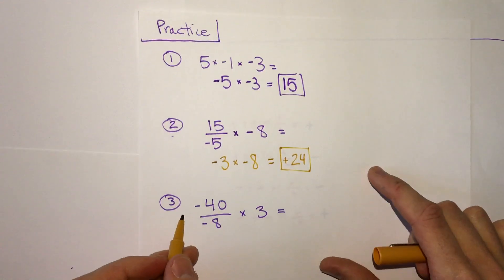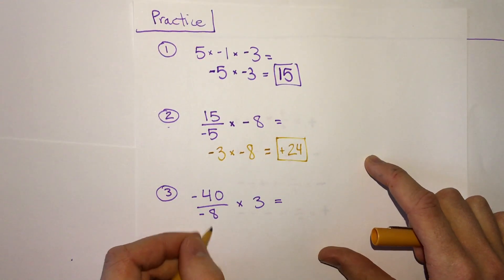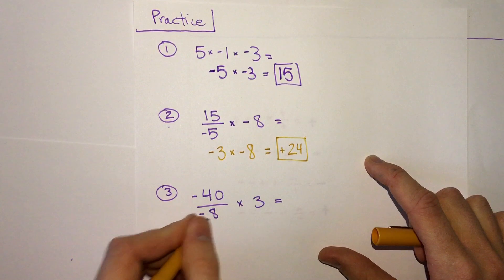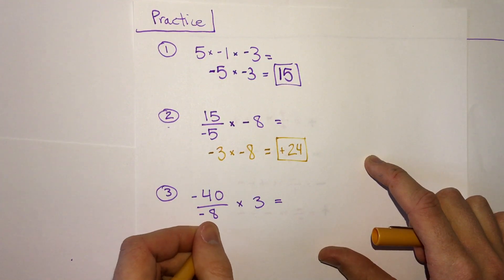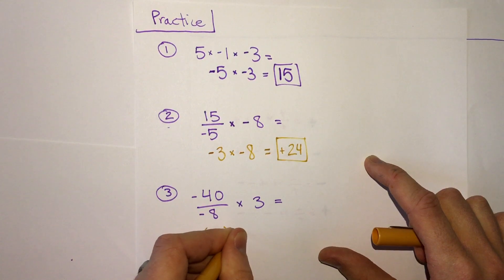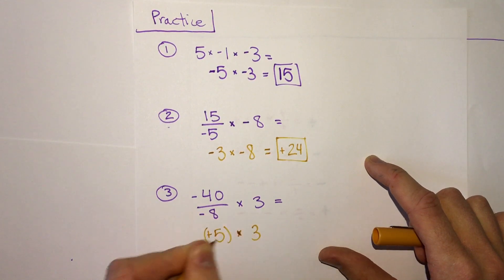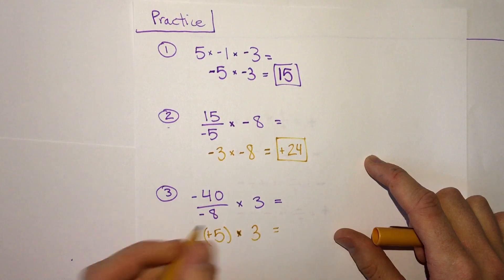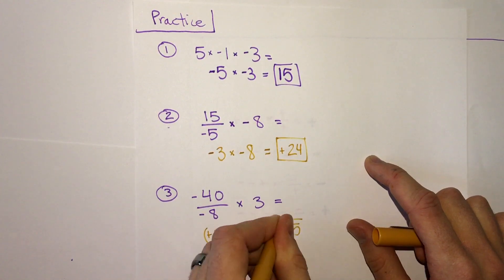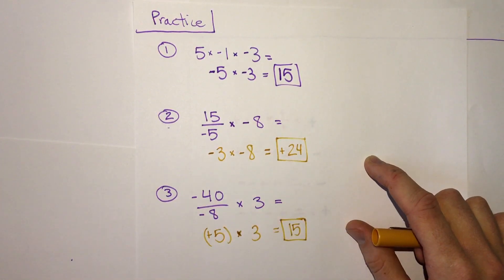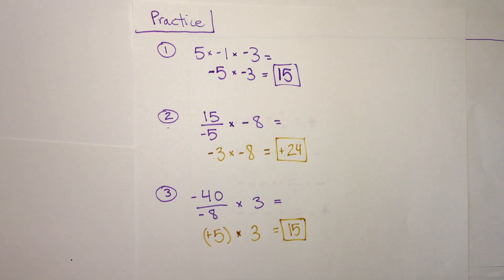And the last one, negative divided by a negative is positive. And 40 divided by 8 is 5. So we have positive 5 times 3, positive times a positive is of course positive. 5 times 3 is also 15. Just like the first one, we get positive 15.